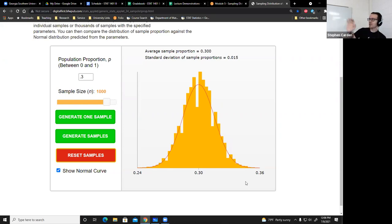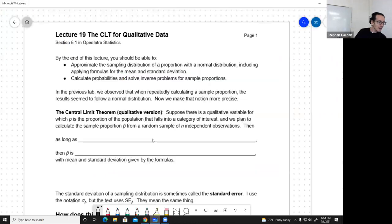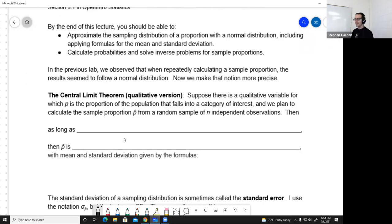All right, so there's a speed run of the qualitative part of lab 18. Let's go into the notes here now. We begin with a formal statement of this result, which is called the Central Limit Theorem. And I've made it, so I'm going to give you two versions of this. One for qualitative data here, and then a quantitative version in lecture 20.